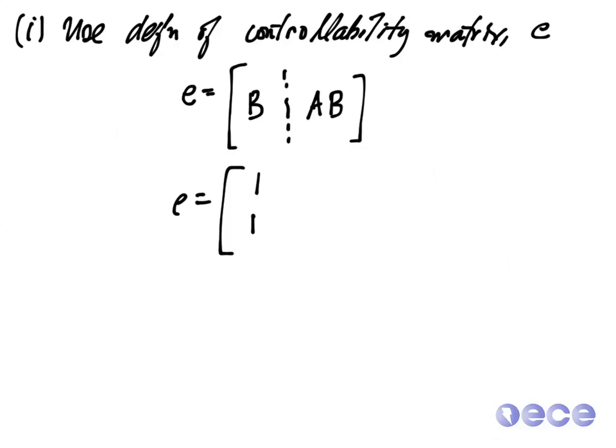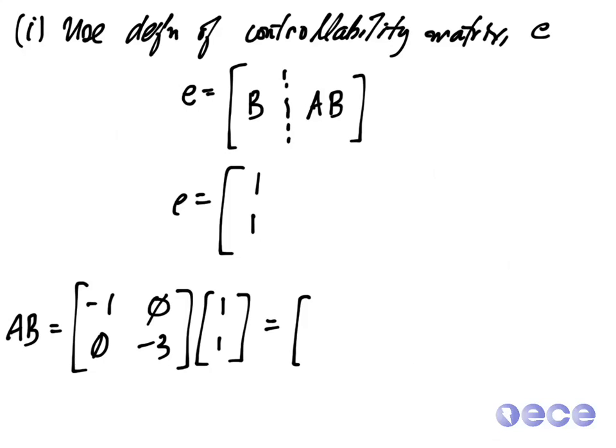So with B previously defined as 1, 1, now we need to calculate A times B. So A times B, as you recall, A was equal to minus 1, 0, and 0, minus 3. So A times B is equal to A times 1, 1. So this value is just going to be minus 1 and minus 3. So we substitute these values in here.